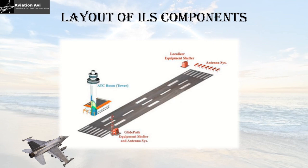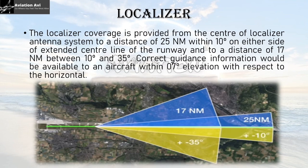Now we'll learn where these instruments are placed so they can align the aircraft on the correct approach path. If this is the runway in use and the aircraft is coming in to land, the localizer is placed at the end of the runway at about 1,000 feet from the runway end. The glide path is placed at about 300 to 400 meters from the threshold, so that they can provide guidance in a very precise manner.